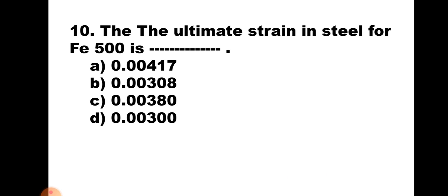Question number 10: The ultimate strain in steel for FE500 is: A. 0.00417, B. 0.00308, C. 0.00380, D. 0.00300. Using the formula: ultimate strain = 0.002 + 0.87FY/ES, substituting FY = 500, we get 0.00417. Note: for FE250 it is 0.00308, and for FE415 it is 0.00380. For this question, the answer is A. 0.00417.